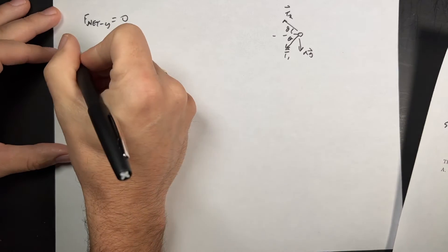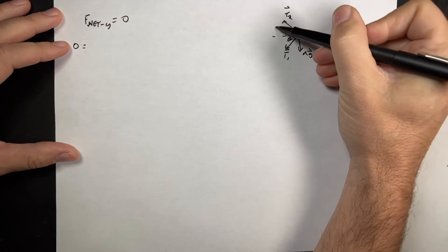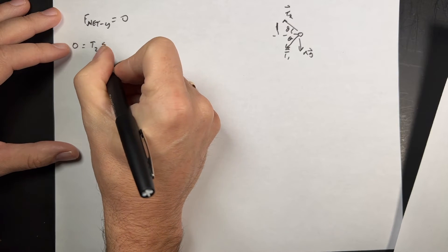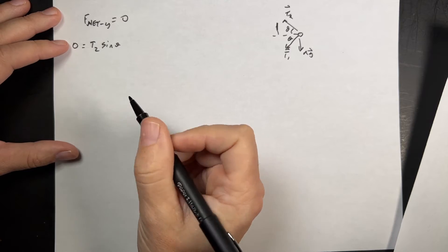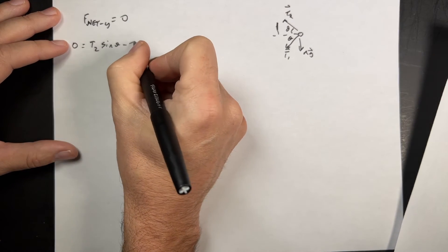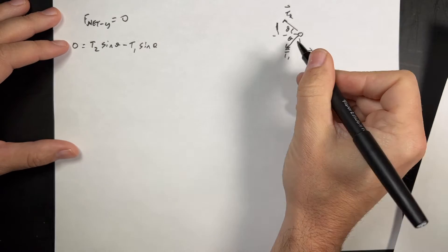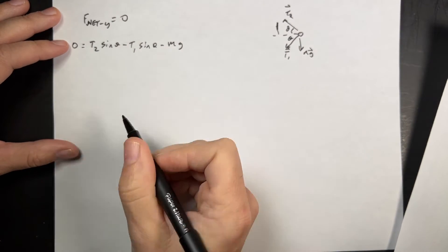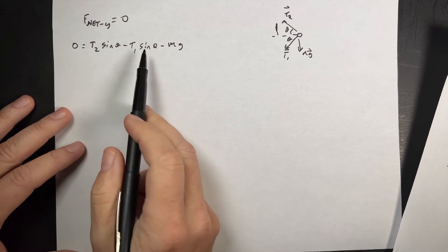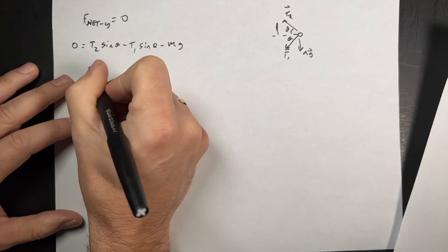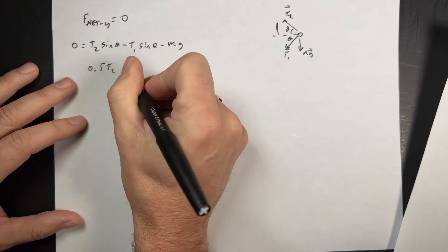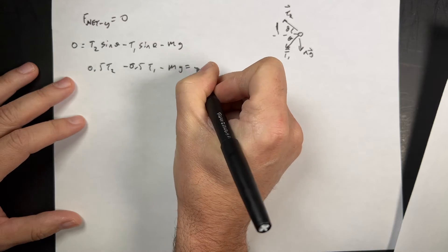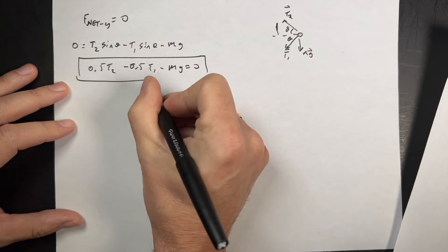So in the y direction, I have zero, then the y component of T2 is going to be T2 sine theta, which I know is 0.5, I didn't even find that angle, see, minus T1 sine theta, because it has the same angle, minus mg. So I don't know T1 and T2, but I do know I can write this as 0.5 T2 minus 0.5 T1 minus mg equals zero. So that's an equation. I have two variables I don't know, and that's fine.